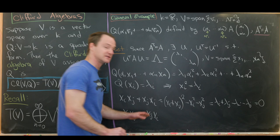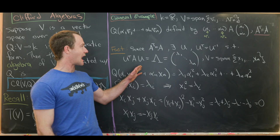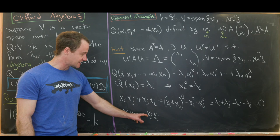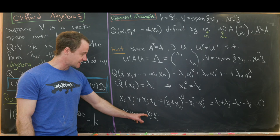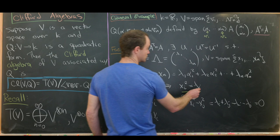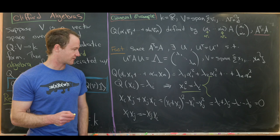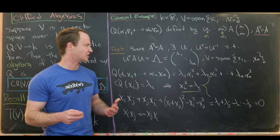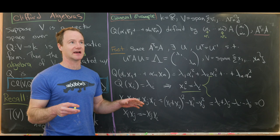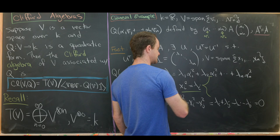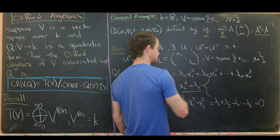To reiterate: our quadratic form has been diagonalized, so when we multiply a basis vector with itself we get a scalar λᵢ, and basis vectors anti-commute with each other — xᵢxⱼ equals minus xⱼxᵢ for all i and j. Just as in our one-dimensional case, the relation xᵢ² equals λᵢ splits into three non-isomorphic cases. If λᵢ is 2, that's isomorphic to the case when λᵢ equals 1 by a change of basis. So the three different possibilities are: xᵢ² equals 1, 0, or negative 1.